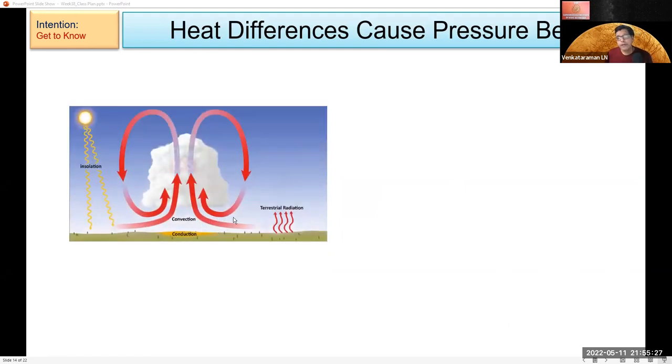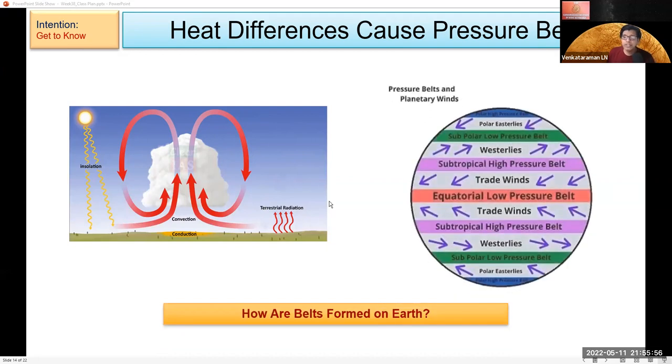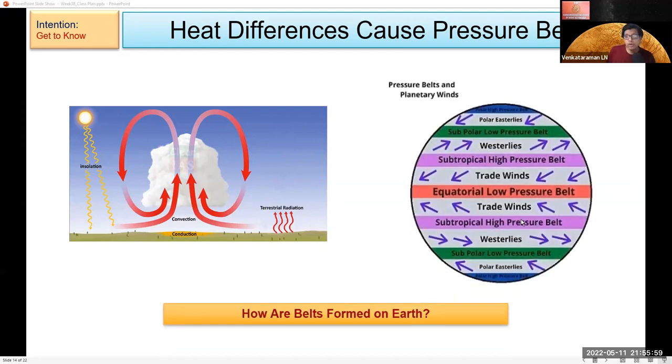So the hot air at the equator will tend to rise up because it's lighter, and that will bring cold air from the surrounding parts. That creates convection. Basically, the equatorial region will be low in pressure because the air is moving up. This creates a kind of belts on the Earth - the pressure belts: equatorial low pressure and then you have these. These are things we learn in geography class in school.